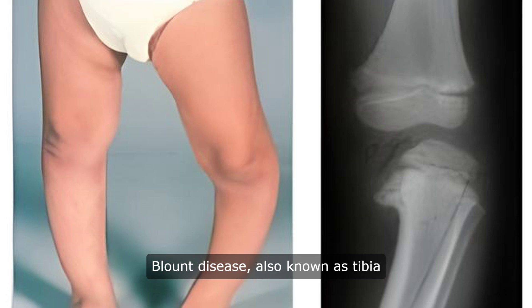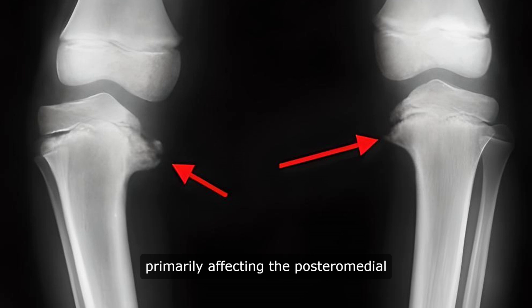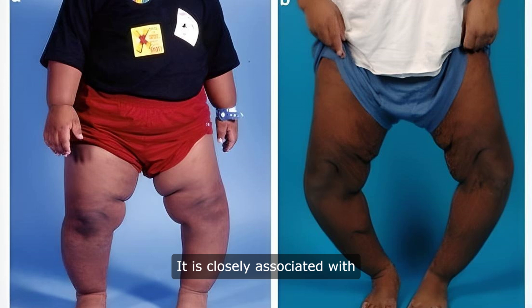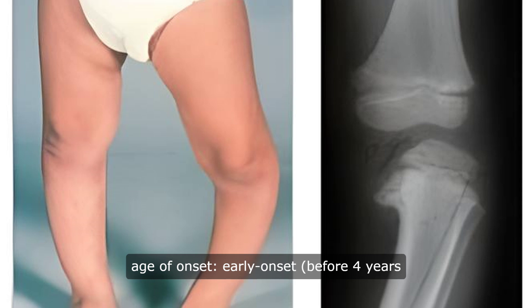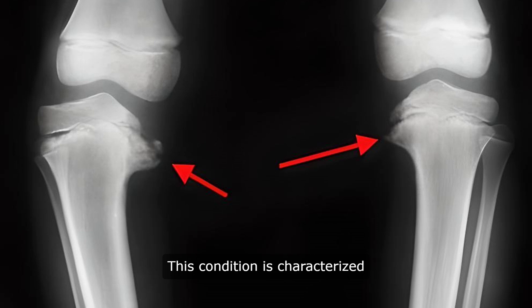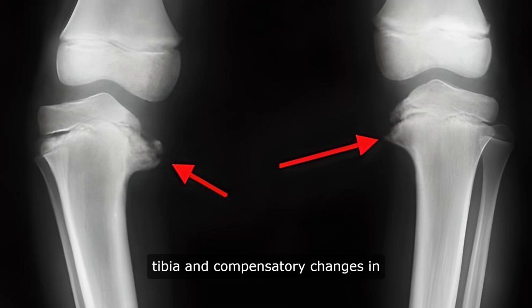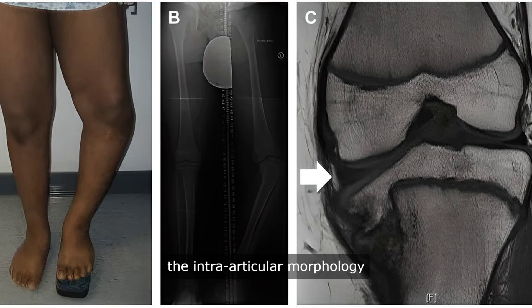Blount disease, also known as tibia vara, is a developmental disorder primarily affecting the posteromedial portion of the proximal tibial growth plate. It is closely associated with childhood obesity and manifests in two distinct forms based on the age of onset: early onset before four years of age and late onset after four years of age. This condition is characterized by physeal abnormalities of the proximal tibia and compensatory changes in the intra-articular morphology of the medial compartment of the knee.